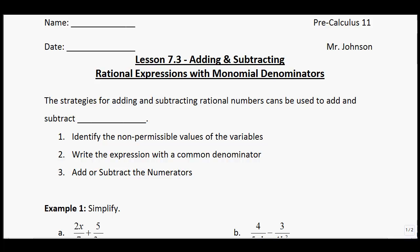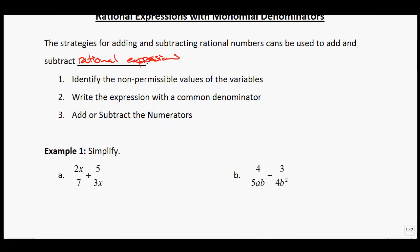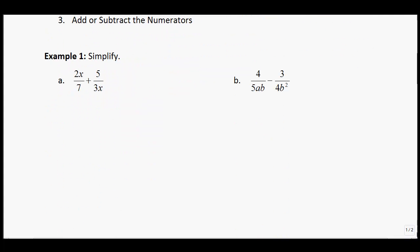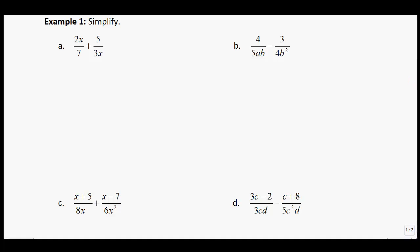The strategies for adding and subtracting rational numbers can be used to add and subtract rational expressions. I've broken this down into three different steps for you. Step 1: identify the non-permissible values of the variables. Step 2: write the expression with a common denominator. Step 3: add or subtract the numerators. As you've seen with all of these, we first are going to write down what your NPVs are.